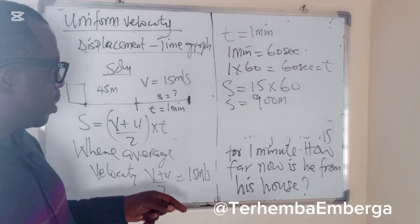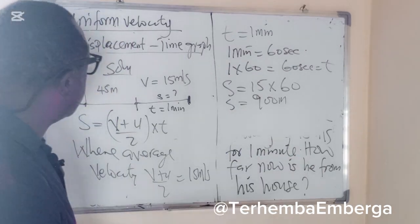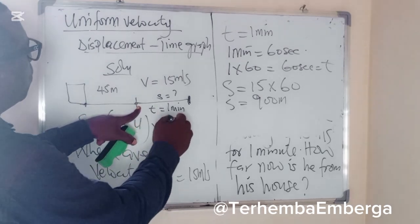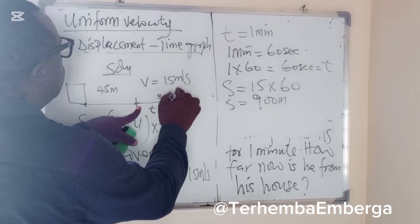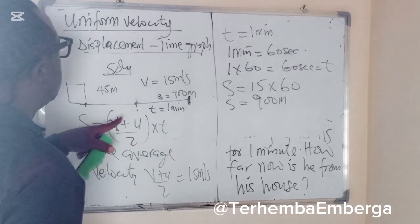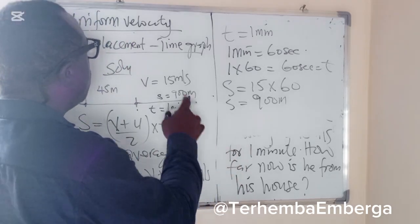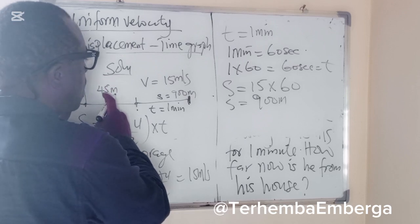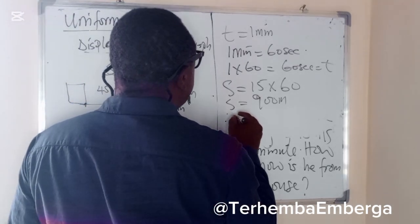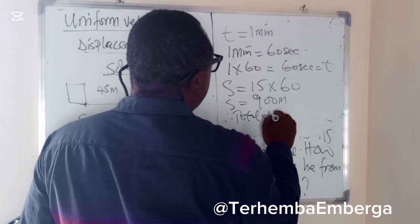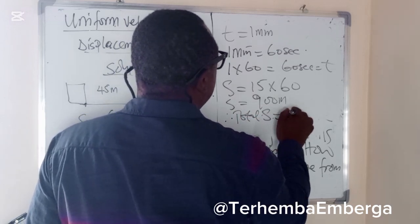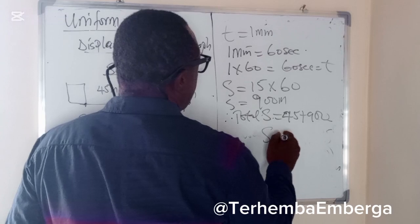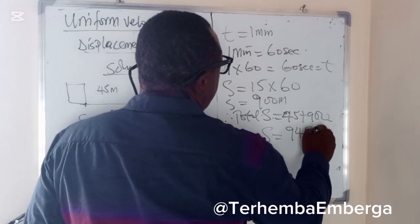But that is not the final answer, because the question asks how far he is from his house. He already covered 45 meters before he started running, and we have calculated the distance he ran to be 900 meters. So to find the total distance from where he is now to the house, we simply add: total S equals 45 plus 900, which gives us 945 meters.